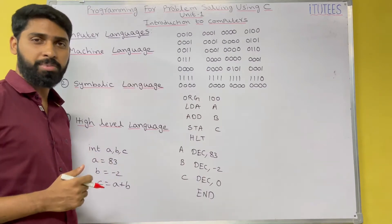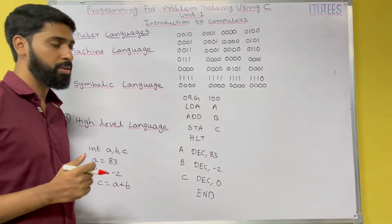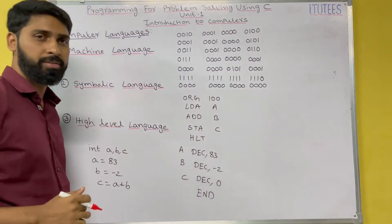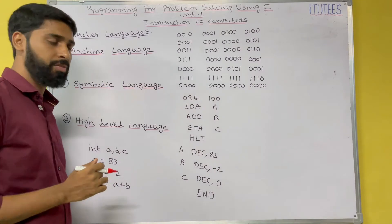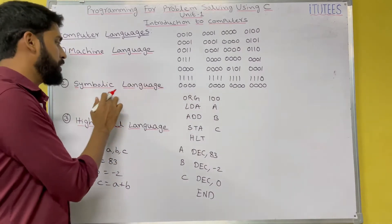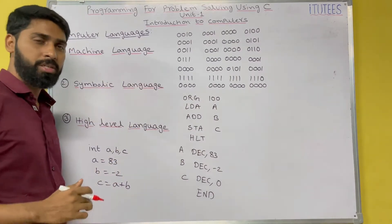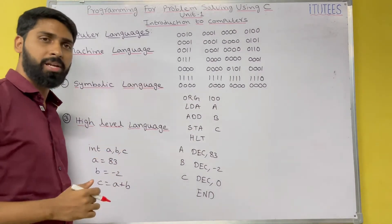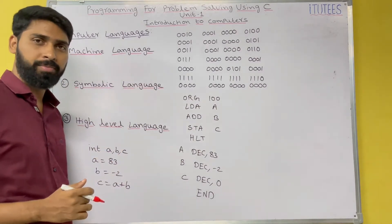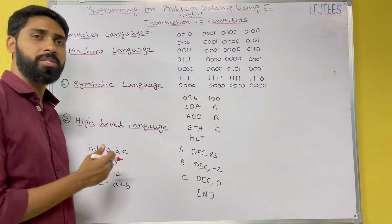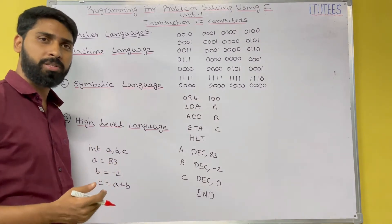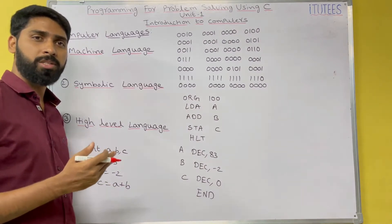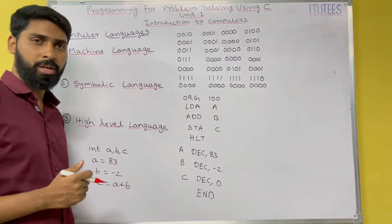We have three types of languages. One is machine language, the second one is symbolic language, and the third one is high level language. By using any of these languages, you are going to give the instructions to the computer.